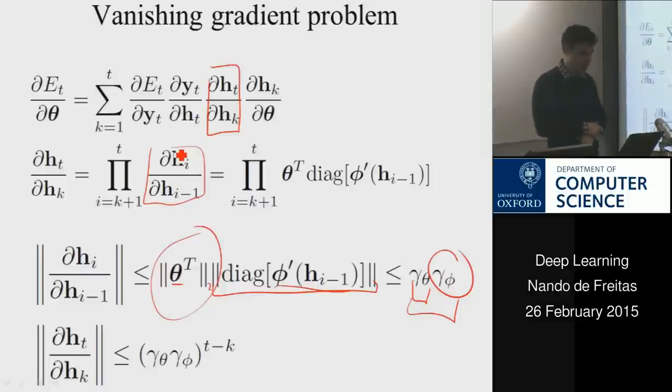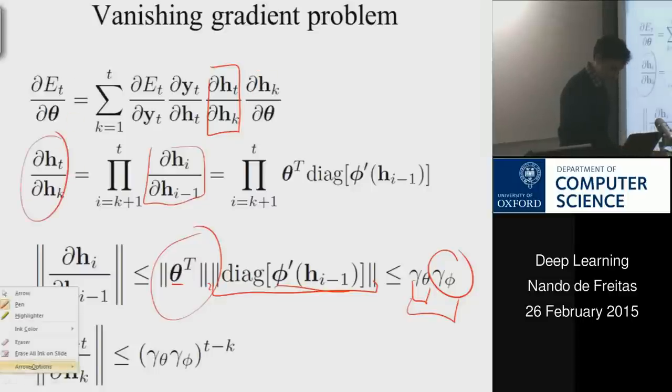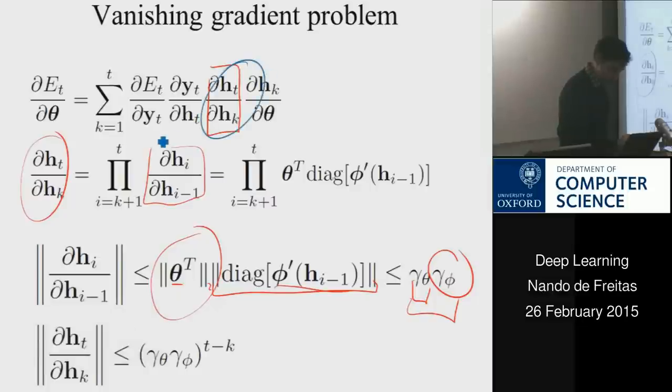T minus K steps. And so if K is say 100 steps before T, if I'm trying to compute derivatives all the way back 100 time steps, then this Jacobian, this term here,